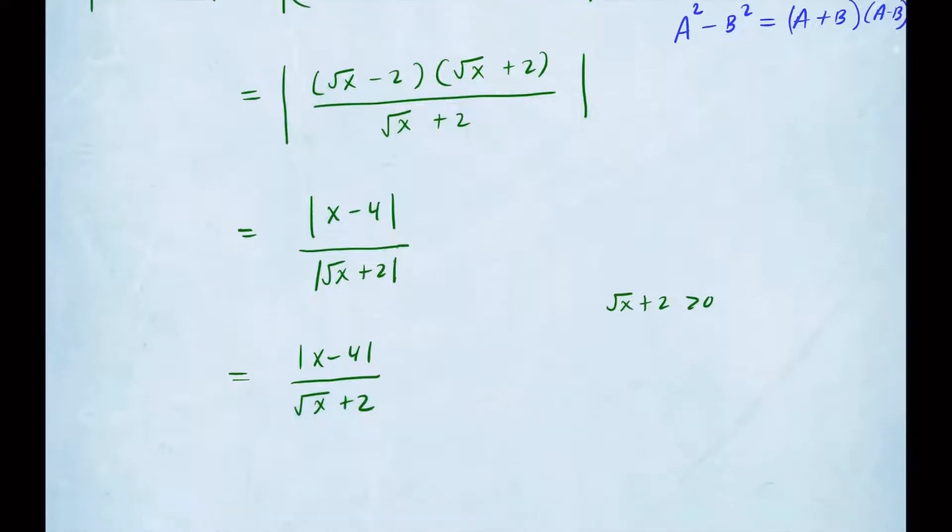Now it looks almost like our assumption, except the denominator we just wanted a 2, not a square root of x. Can we just drop that? Yeah, we can, but let's think about it this way. If I drop this factor, I am going to say that this is less than or equal to absolute value of x minus 4 over 2. Think about it: if you plug in 1 here for x, you'll have 1 plus 2, so 1 over 3, and then you have 1 over 2.